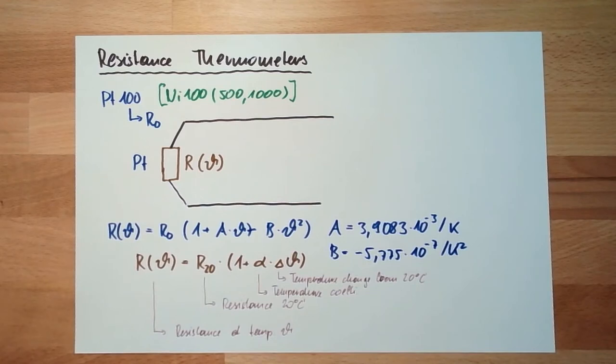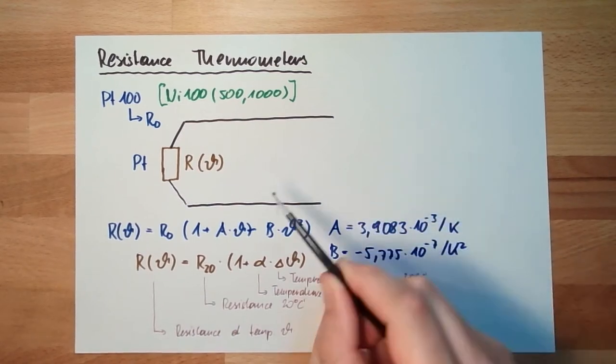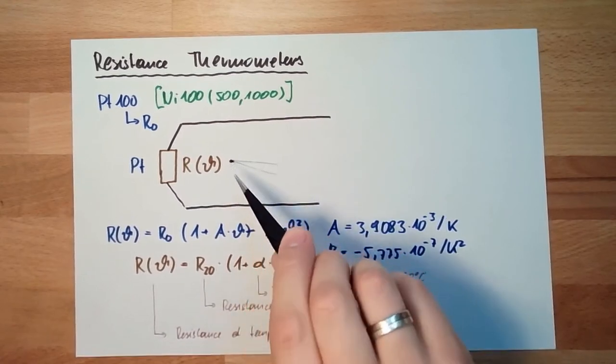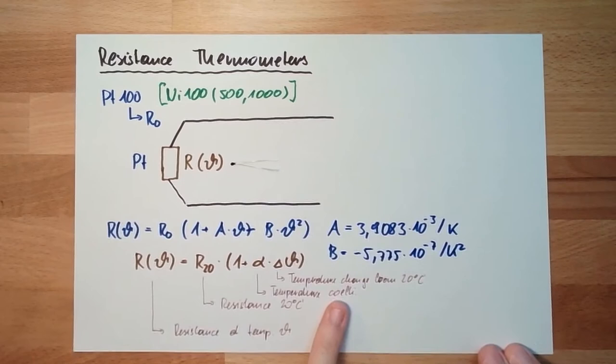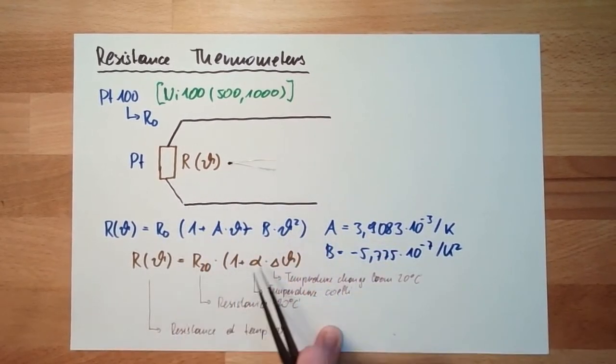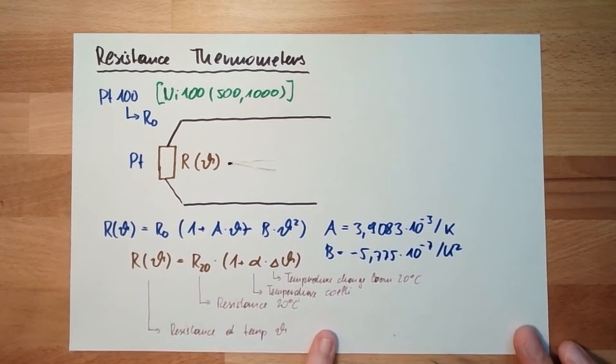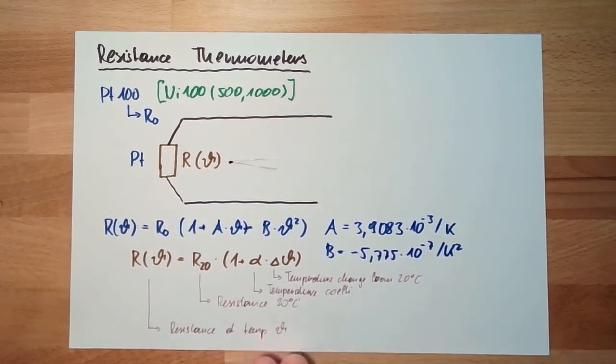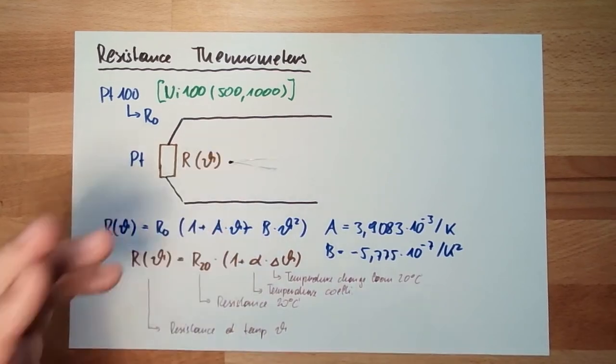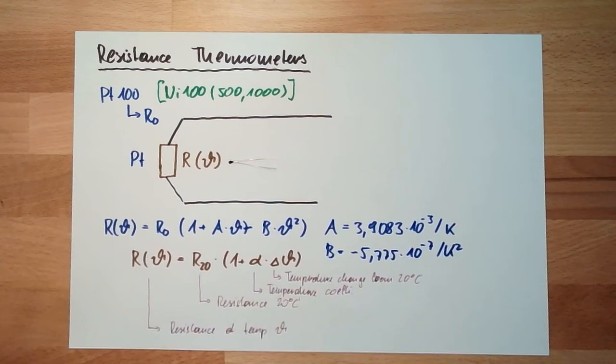I am not sure if you remember, but we used such type of temperature measurement before. There is an Arduino video where we used this little thing here. This was nothing more than this sensor here, however this was not a platinum thing. We used a really strange or very complicated formula which means this was really not linear. This was a so called NTC.